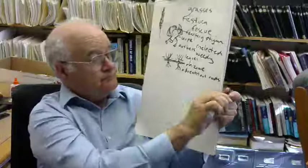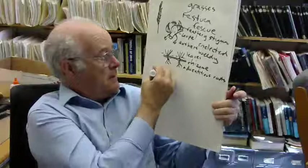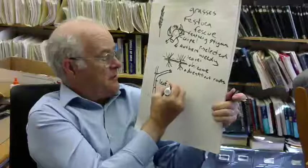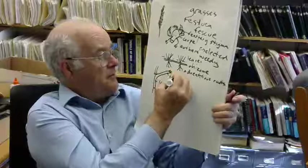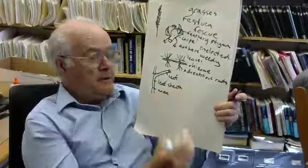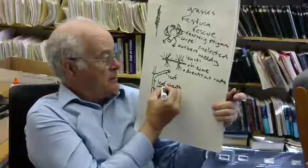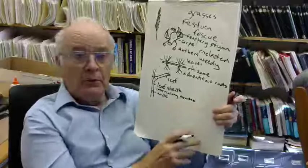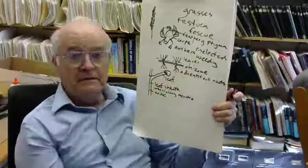Grasses also have a very interesting structure at the nodes. Here's the node of a culm, here's the culm or stem of the grass. This is called a leaf sheath, this is the leaf itself. The leaf sheath has an intercalary meristem, a remarkable structure by which the plant can still produce more leaf even if this part is eaten, taken off, eaten by a cow.